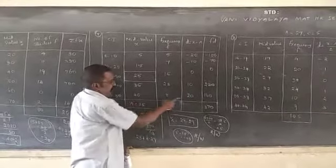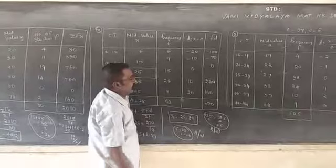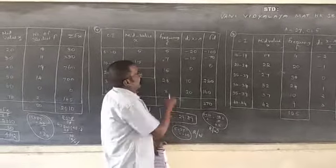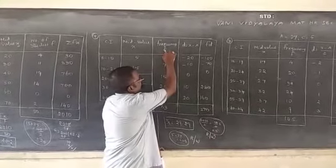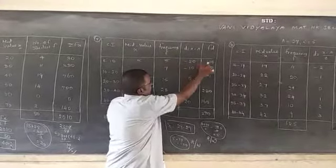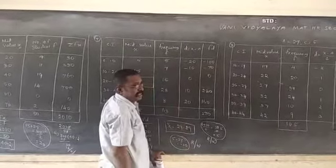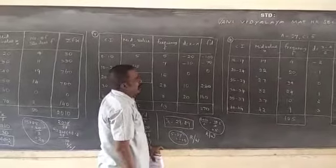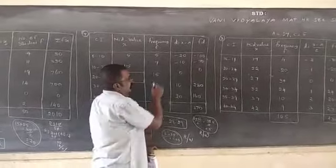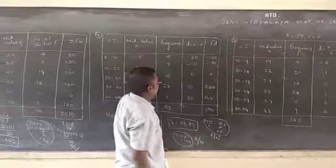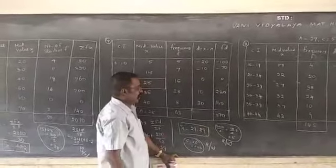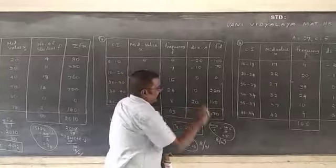45 minus 25 equal to 20. 0 into anything equal to 0. 28 into 10 equal to 280. 38 into 20 equal to 160.